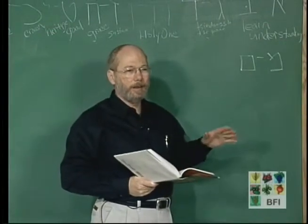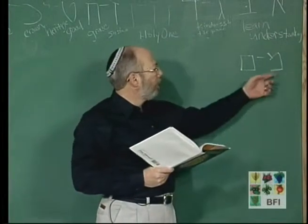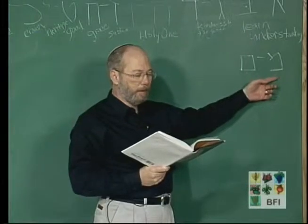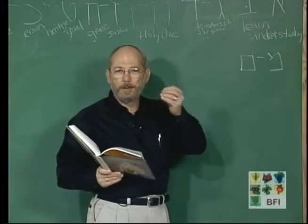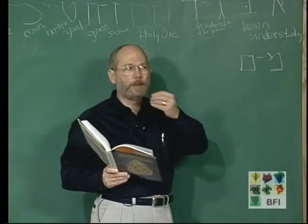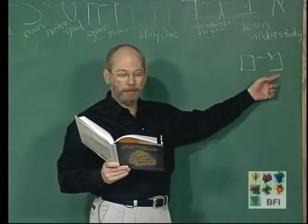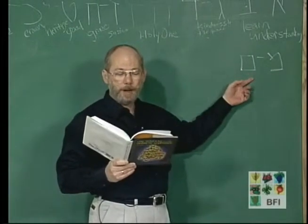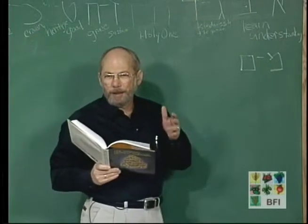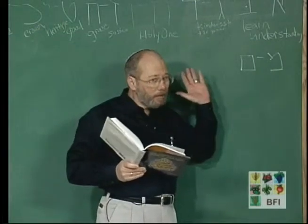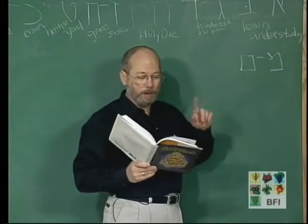They are giving these teachings in a very short form using Hebrew words that begin with these letters. The open MIM represents mamar patuach — an open statement, a revealed teaching. The closed MIM represents mamar satum — concealed teaching. So in the Aleph Beit itself, as well as in all of scripture, there is open teaching and there is concealed teaching. This comes to us from the MIM.